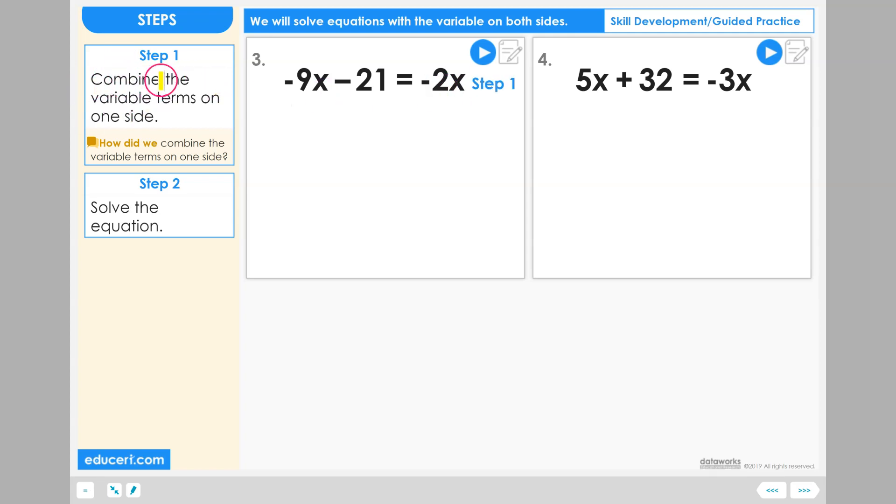Step 1. Combine the variable terms on one side. Now in this case, we have a variable term on both sides of our equation. And we also have the right side of our equation only having a variable term. So in this case, it would make more sense to eliminate the x variable term from the left-hand side and bring them all just to the right-hand side.